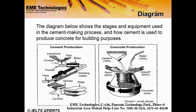First of all, in cement production: limestone and clay are crushed and then powder is produced. The powder is mixed, then heated in a rotating kiln, then ground in a grinder. Then cement is produced and filled into bags.